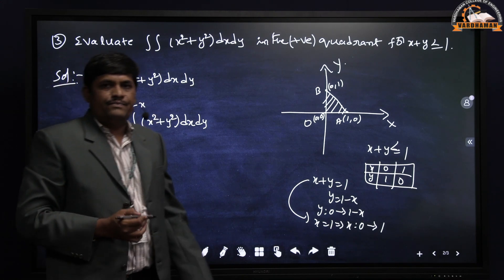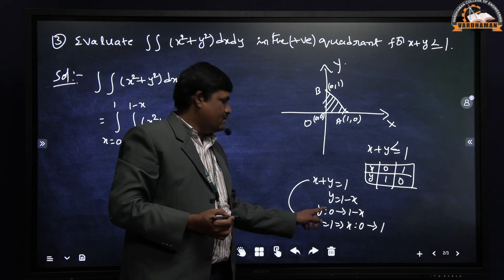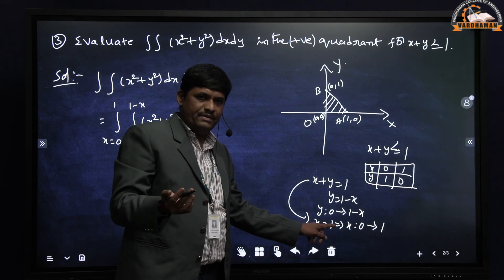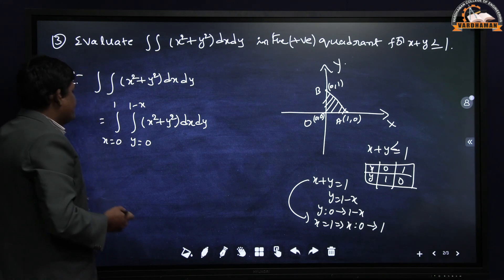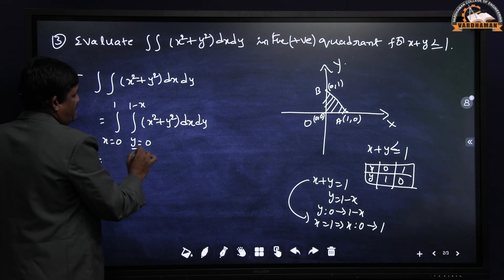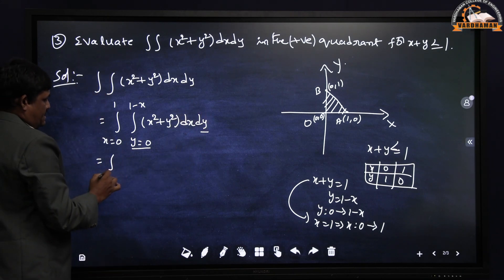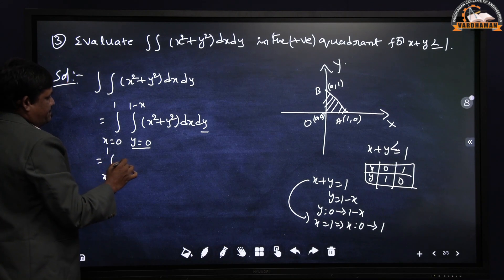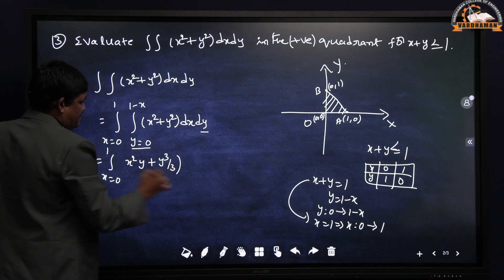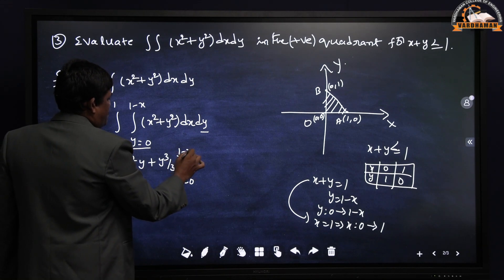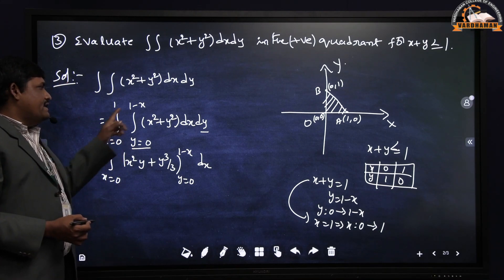There is a valid question: why can't we take x as a function of y? That is also accepted — x running from 0 to 1−y and y running from 0 to 1 is also correct. Here, since y is a function of x, I integrate with respect to y first (dy). Integrating (x² + y²) with respect to y gives x²·y + y³/3, with y from 0 to 1−x, then multiply by dx.